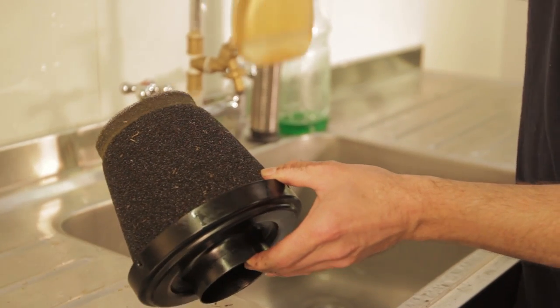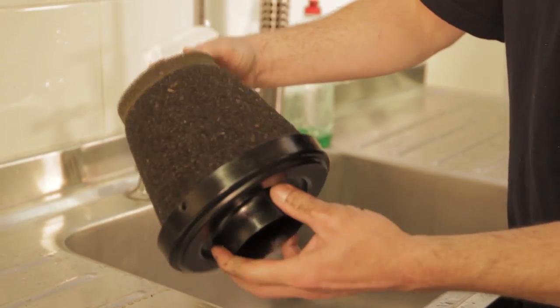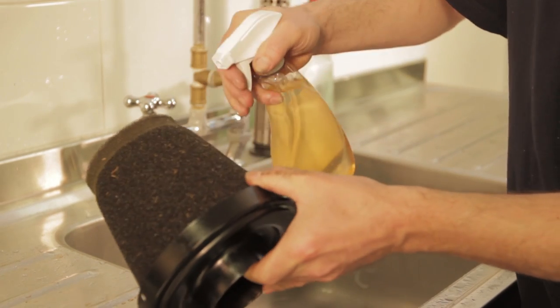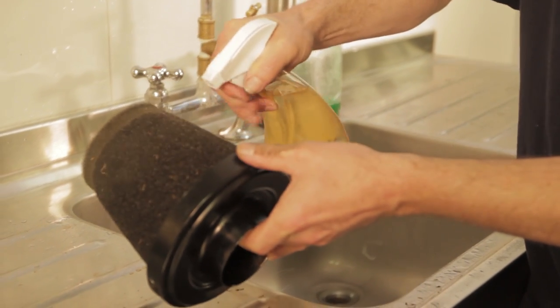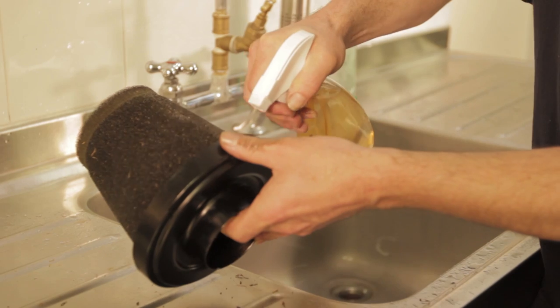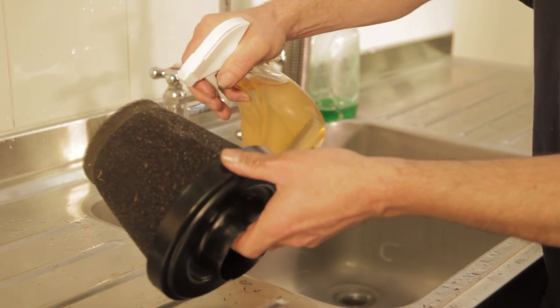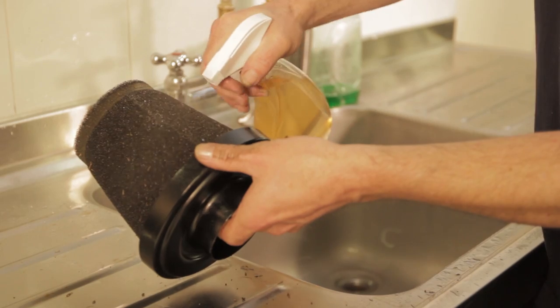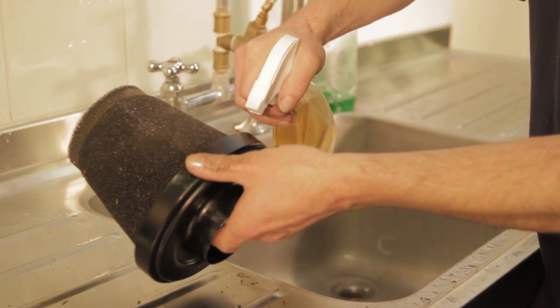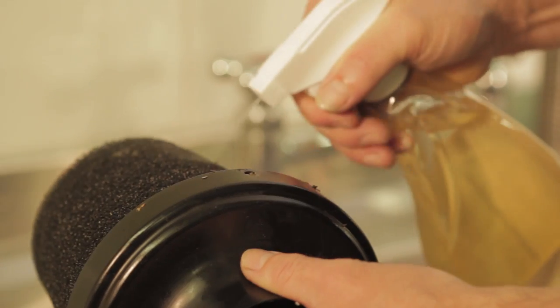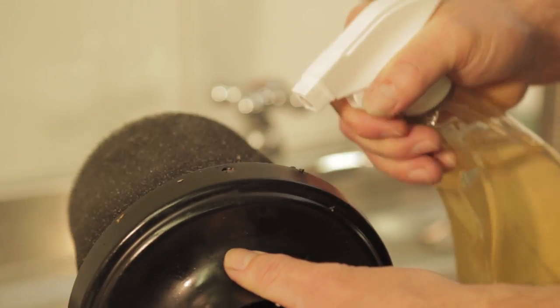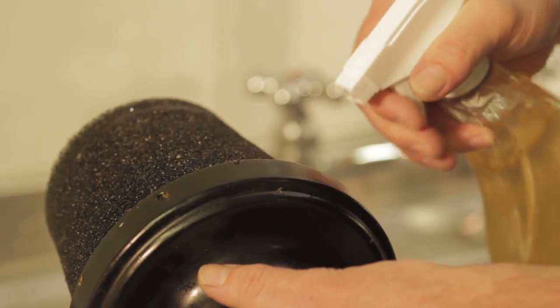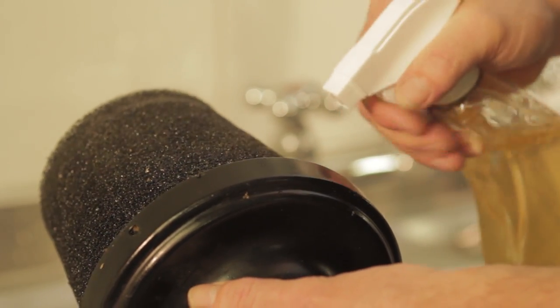We've got it in a pump action bottle here. Make sure that it's set on stream and then just start to pump it into the filter. The idea of the cleaner is to break down the oil that is holding the dust onto the foam. Get plenty on there. You need to make sure this is going to work all the way through to all of the layers, so don't be shy on applying plenty.